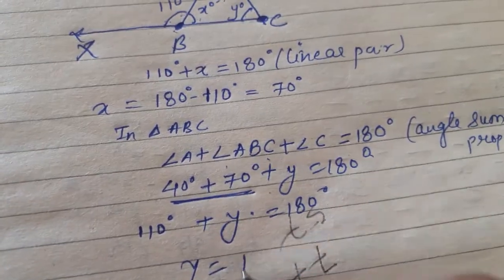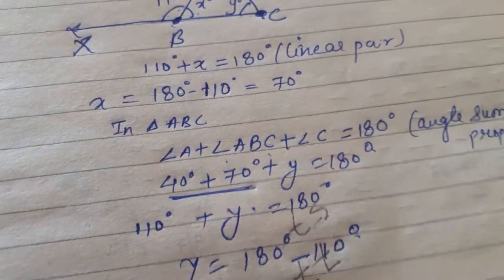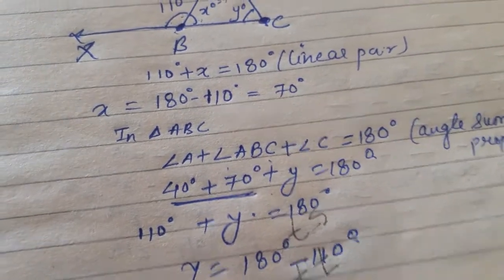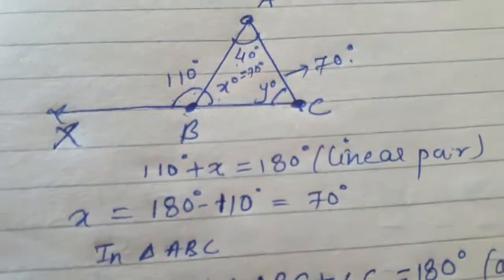Now, y is equal to 180 degrees minus 110 degrees, so y will be equal to 70 degrees. So, y will be equal to 70 degrees.